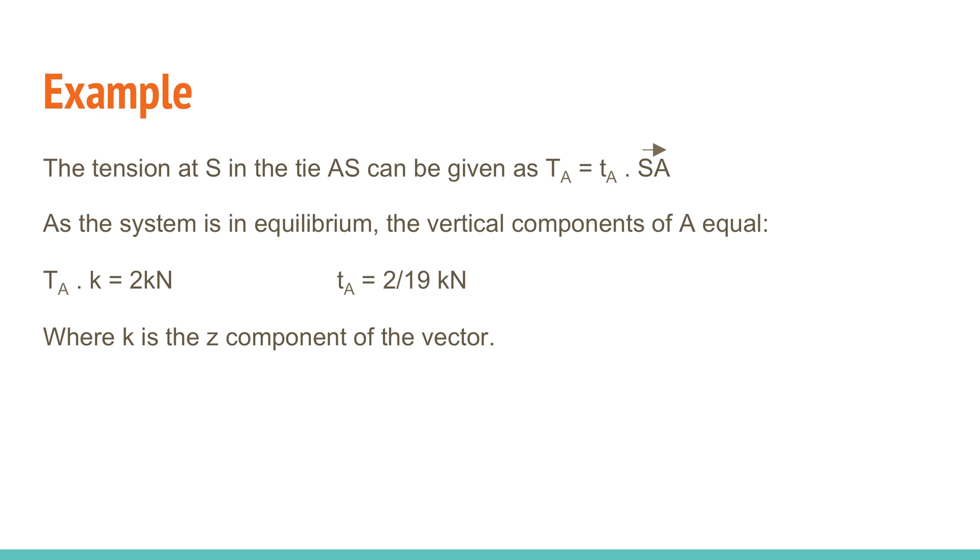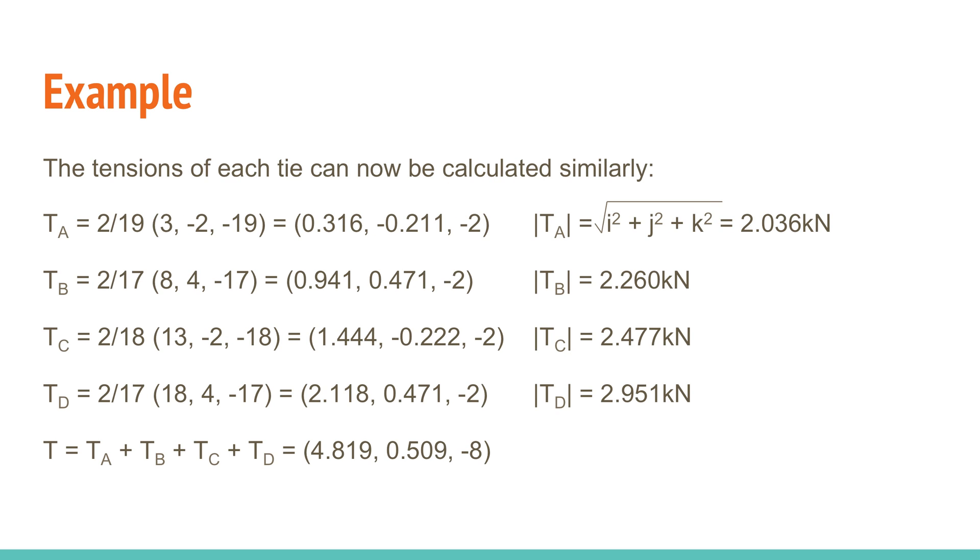The tension at the point S in the tie AS can be evaluated through the following equations. With the system being in equilibrium, we know that the vertical components of A are equal. Therefore, we can find TA to be 2 over 19kN. The tension of each tie can now be calculated using the method mentioned previously. To find the tension as a single number, we calculate the square root of the sum of each point squared as shown. The total tension can now be found by adding the tension of each tie. I will now pass on to Jordan.